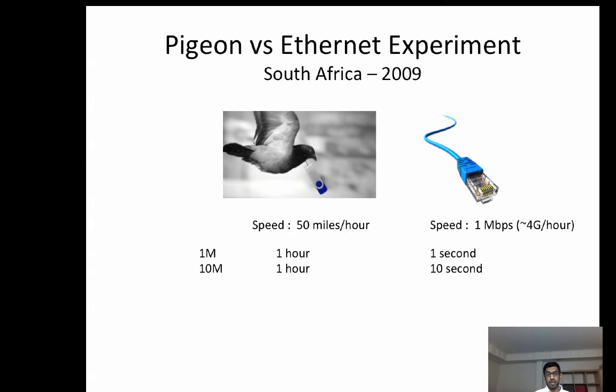What if you have 10MB of data? Well, obviously the pigeon is still going to take the same time because the distance is the same, while the Ethernet is going to take 10 seconds because we have a 1 Mbps connection. Likewise, if you have 32GB of data, the pigeon will still take 1 hour, while the Ethernet connection takes 8 hours.